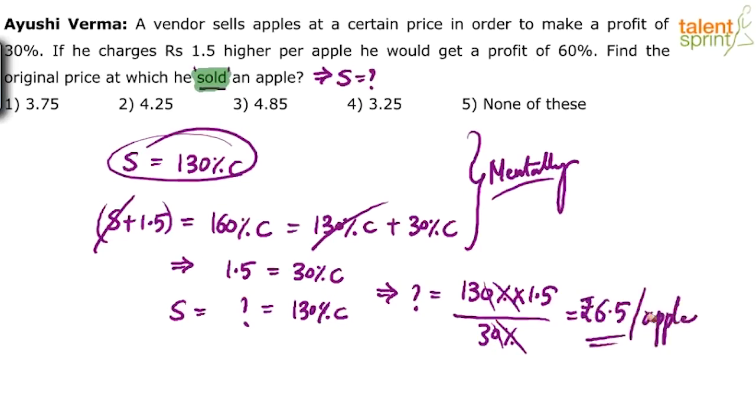Original selling price is 6.5 per apple. Most of you have got option 5, none of these. But when I inquired for the correct answer, you said we are getting 5, which is wrong. 5 is the cost price. If 1.5 is 30%, 100% will be 5. But did he ask us to find out the cost price? He has asked us to find out the original price at which he sold the apple.